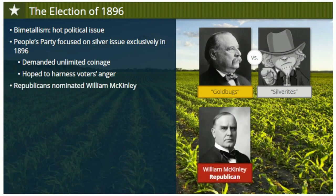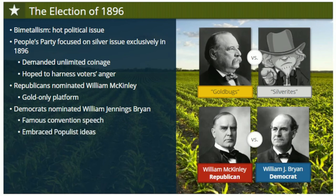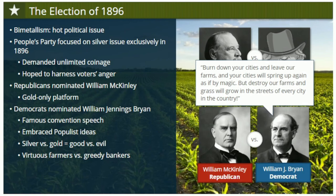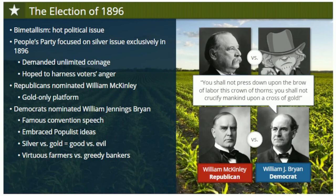The Republican Party nominated William McKinley, an Ohio conservative who ran on a gold-only platform. But the Democrats nominated a fresh face — a young congressman from Nebraska named William Jennings Bryan. Bryan wasn't expected to win the nomination, but at the Democrats' convention, he captivated the audience with a famous speech in which he fully embraced populist ideas. Bryan made the issue of silver versus gold seem like a struggle between good and evil, painting a picture of an American divide between virtuous Western farmers and greedy Eastern bankers. At the end of his speech, Bryan used religious imagery: 'You shall not press down upon the brow of labor this crown of thorns. You shall not crucify mankind upon a cross of gold.'